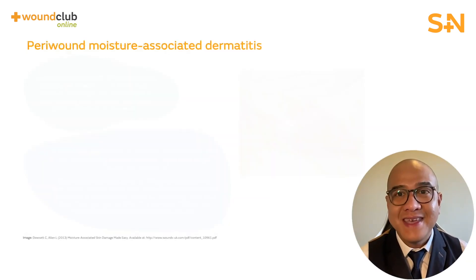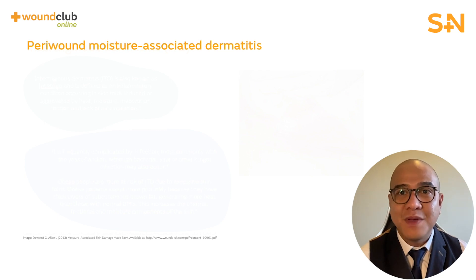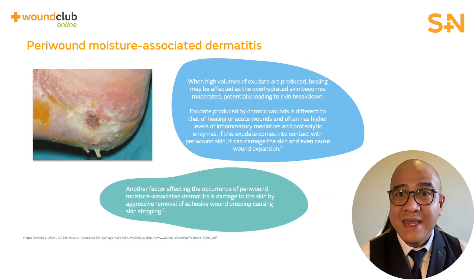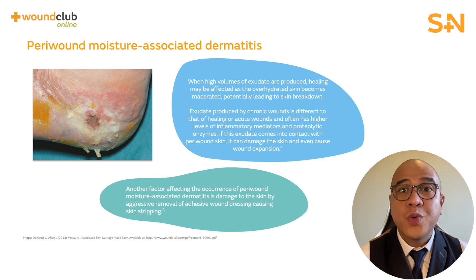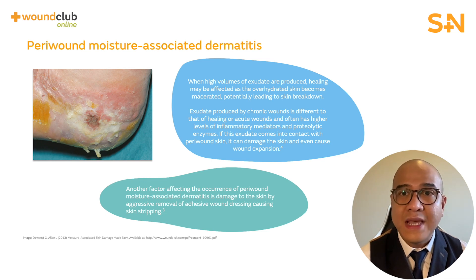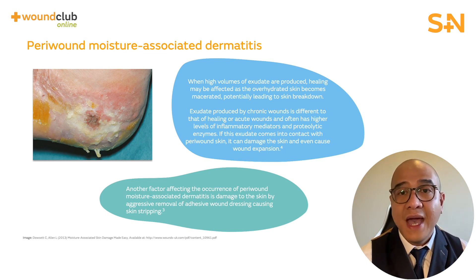The third type of MASD is peri-wound moisture-associated dermatitis, which I have seen in my own clinical practice. It is generally caused by a wound producing a high volume of exudate, causing over-hydration of the skin leading to maceration. Wound exudate contains proteolytic enzymes, and exudate from chronic wounds has a much higher level of these enzymes, which can damage the peri-wound skin and may even cause wound expansion.